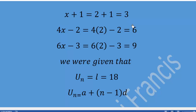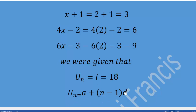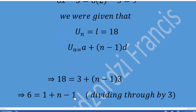The common difference is 6-3 = 3, or 9-6 = 3. Now since the last term is also a term in the AP, we can use the nth term formula to find n. Substituting the last term 18, first term 3, and common difference 3 into u_n = a + (n-1)d, we get 18 = 3 + (n-1)×3.